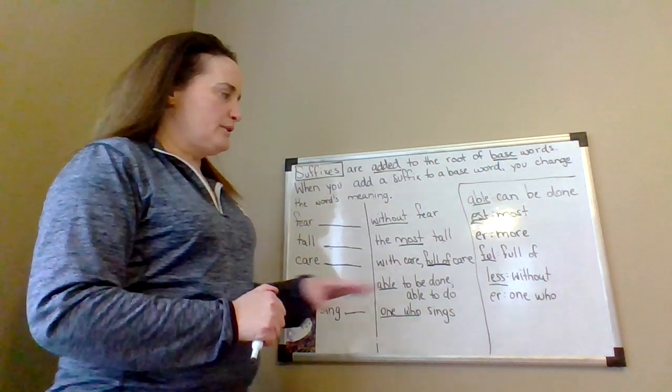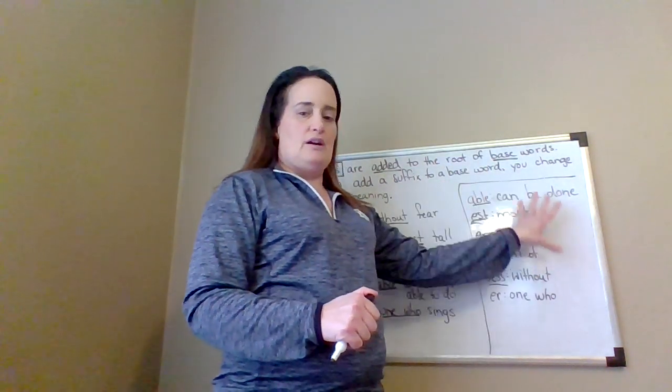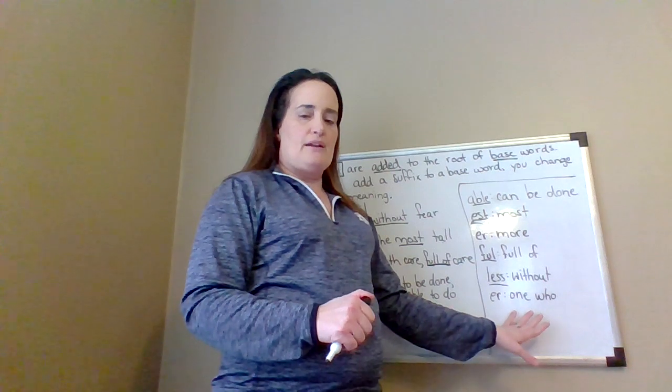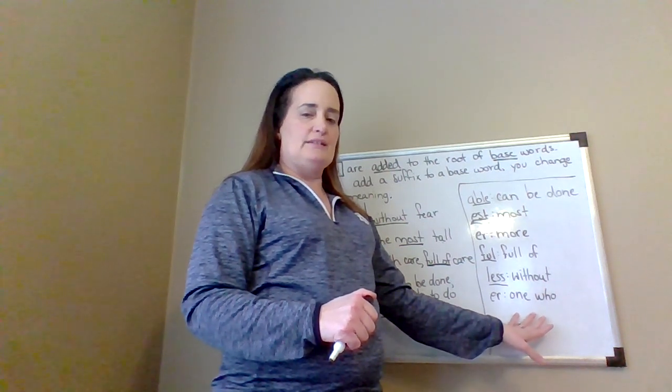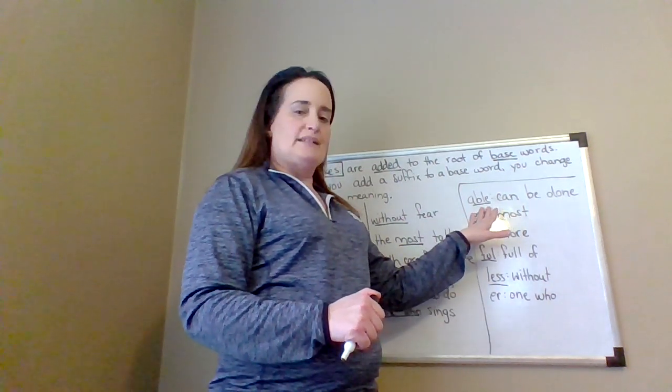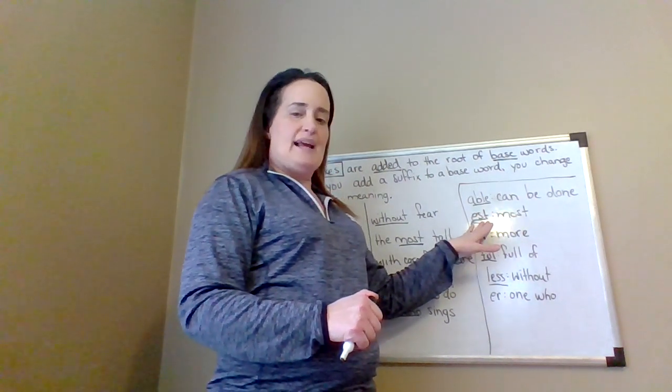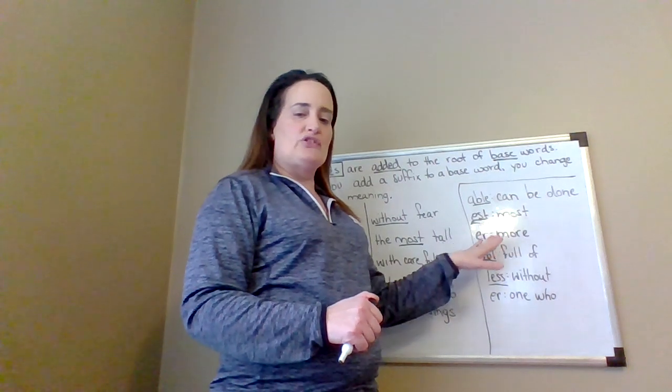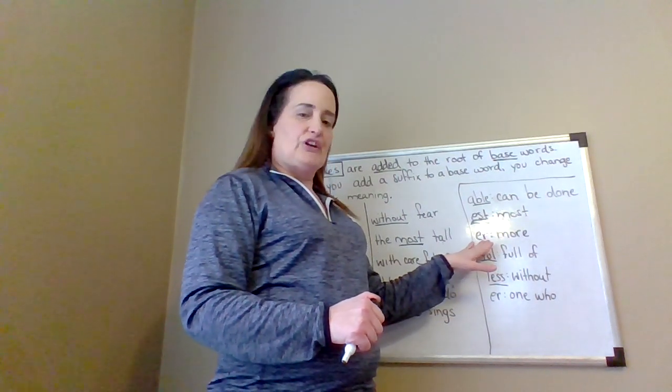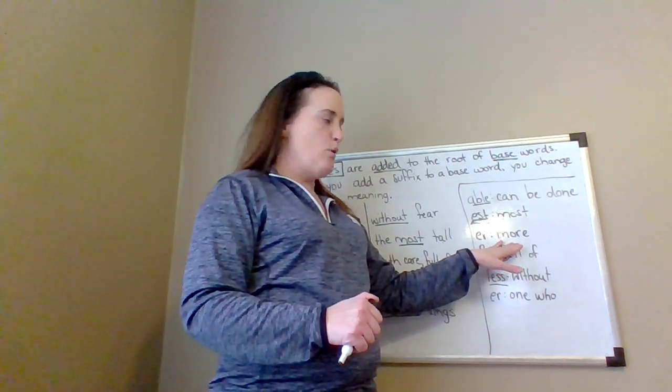So today we're going to look at this bank of suffixes. The first one is 'able,' that means can be done. The second one is 'est,' that means most. The third one is 'er,' that means more.